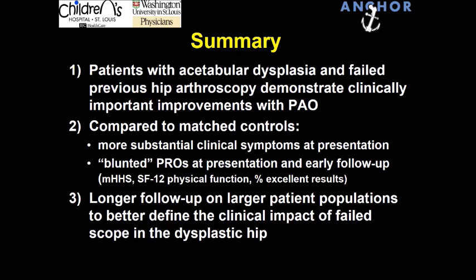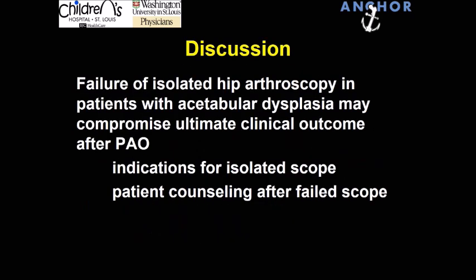In conclusion, patients with acetabular dysplasia and failed previous hip arthroscopy do demonstrate clinically important improvements in pain relief, function, and activity. But when compared to the matched group, these improvements are blunted — they present with lower scores and end up with lower scores, with clinically important differences in final hip scores. We need longer-term follow-up on larger patient populations, but these data suggest that patients who have had previous arthroscopy and are undergoing PAO may have suboptimal outcomes relative to that operation.